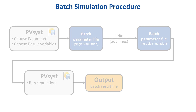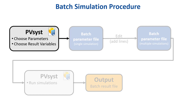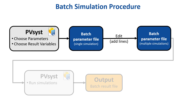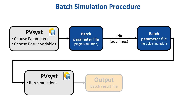The basic procedure when running a Batch Simulation in PVSYST is shown in this diagram. From within PVSYST, we first choose the simulation parameters that are going to be changed in the Batch Run, as well as the result variables that should be present in the output file. From this, PVSYST will create a Batch Parameter file in CSV format that contains the definition for a single simulation. The user then needs to edit this file, adding a line for each simulation that should be run. The complete parameter file is then fed back into PVSYST, which will execute all the specified simulations. After the Batch Simulation is complete, PVSYST will generate a second CSV file that contains the simulation results.